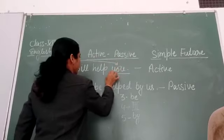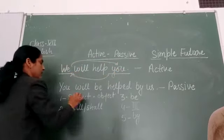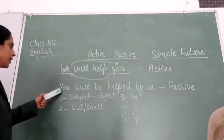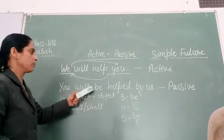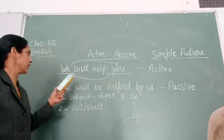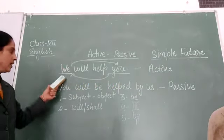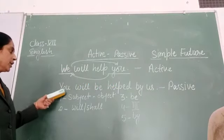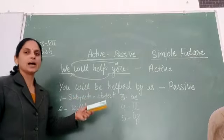Here, it will be here or it will be here. Now, what will? You will be helped by us. Us is the object of we. In this way, you will be helped by us.